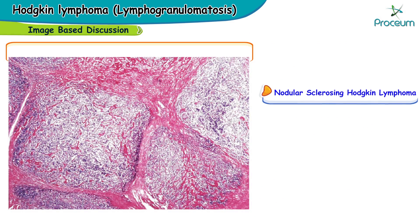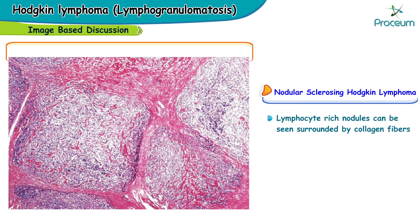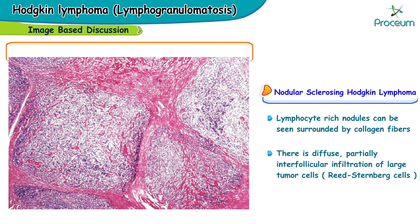Here's an image showing nodular sclerosing Hodgkin's lymphoma. Lymphocyte-rich nodules can be seen surrounded by collagen fibers, which gives the nodular consistency. There is diffuse partially interfollicular infiltration of large tumor cells, which are the Reed-Sternberg cells. When magnified further, you can clearly appreciate the presence of classic Reed-Sternberg cells which look like owl's eyes.